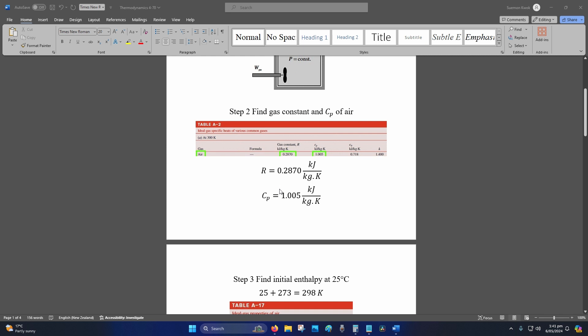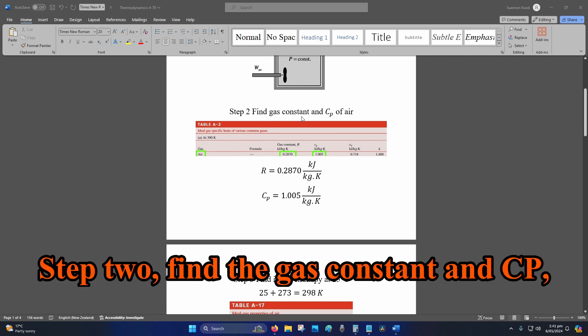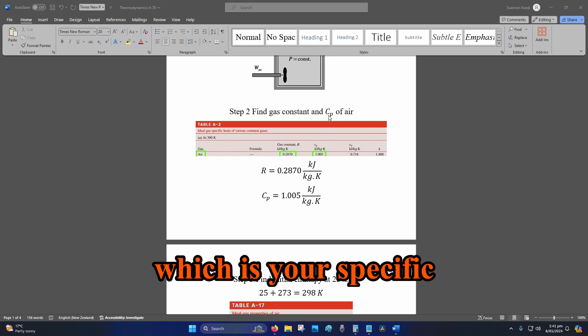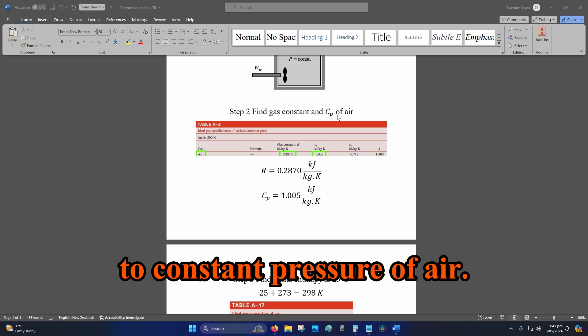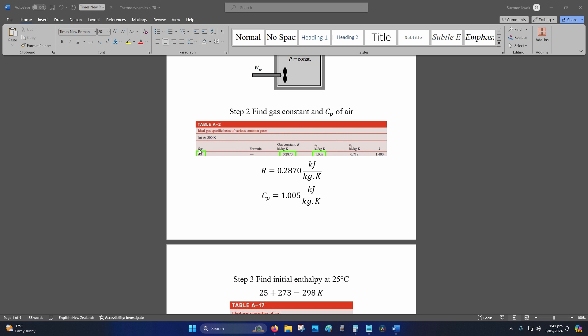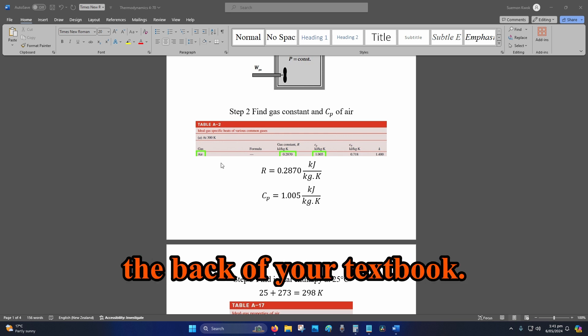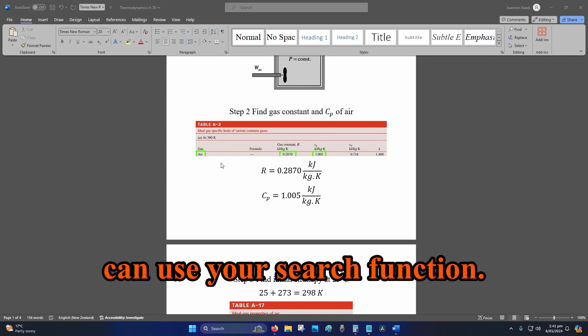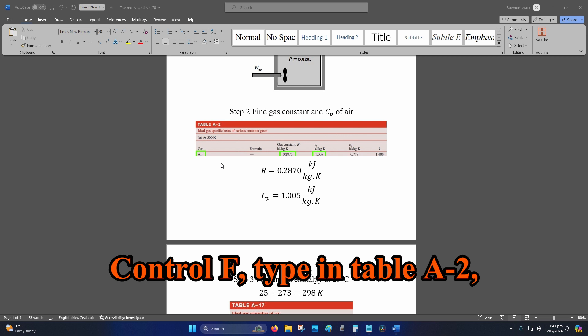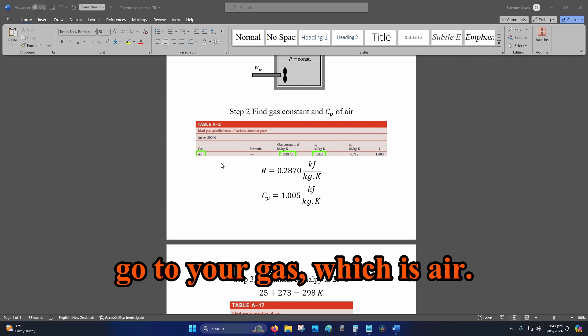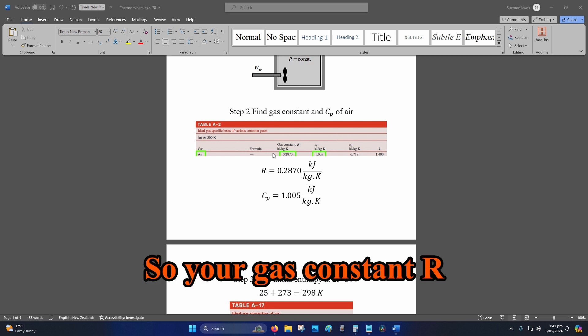Step two: find the gas constant and cp, which is your specific heat capacity with respect to constant pressure of air. You can find this table at the back of your textbook. If you bought the PDF, you can use your search function, control F, type in table A-2, go to your gas which is air. So your gas constant R value is 0.2870 kilojoules per kilogram Kelvin. Your cp is 1.005 kilojoules per kilogram Kelvin.